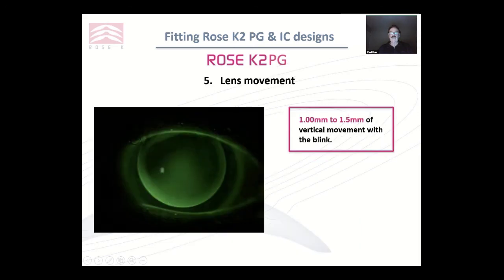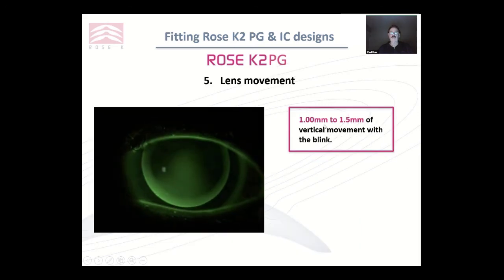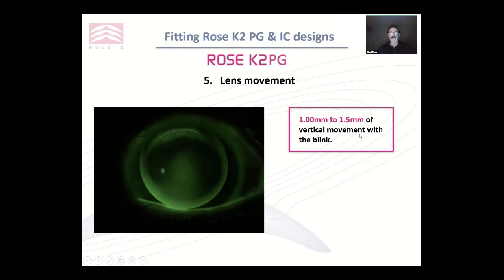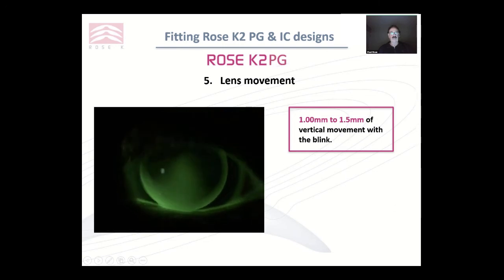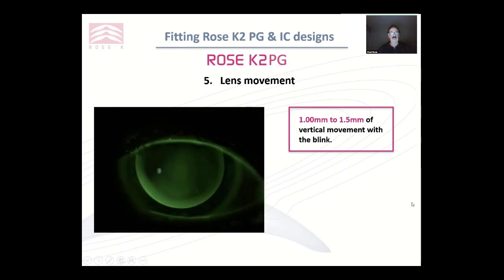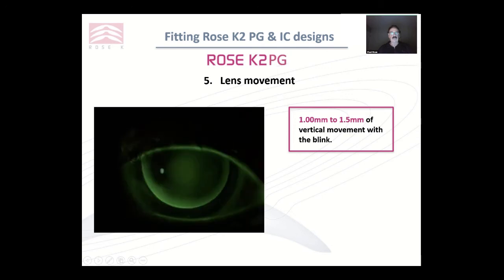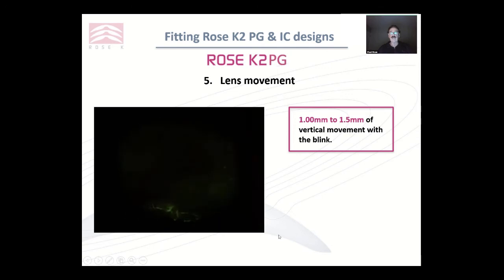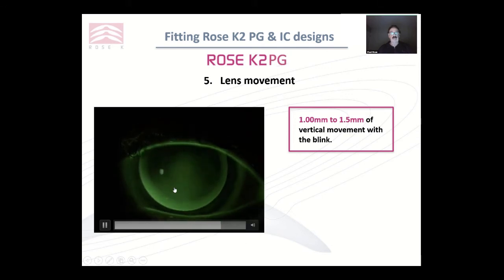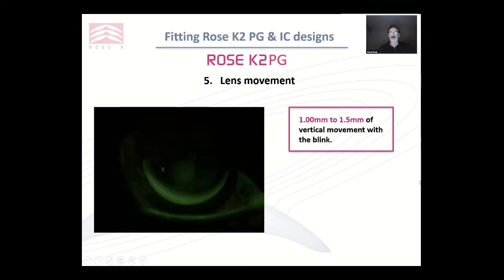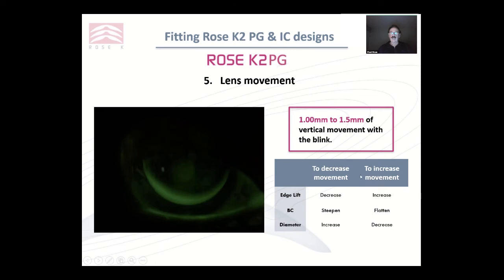Finally, lens movement. We're looking for about 1 to 1.5 mm of vertical movement with a blink. As you can see here, this is a quite ideal amount of movement — this will ensure we get tear exchange, keeping the area under the central cornea refreshed with fresh tears. To decrease the movement, decrease the edge lift, steepen the base curve, or make the lens bigger. To increase it, do exactly the opposite.